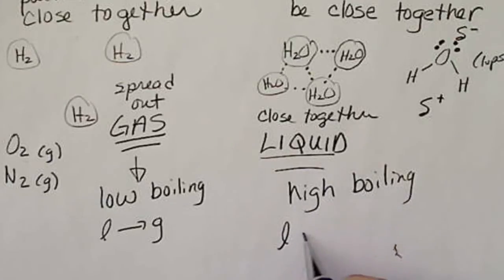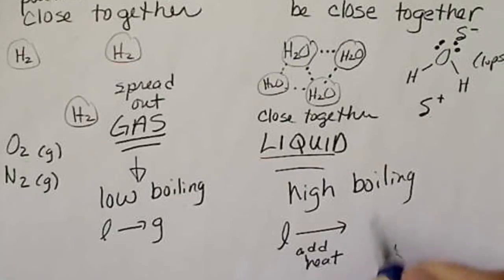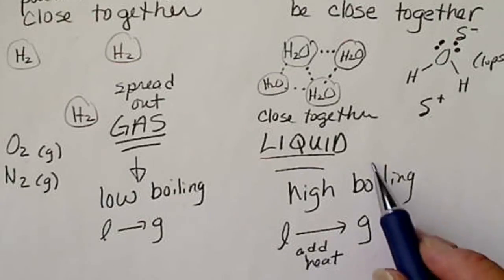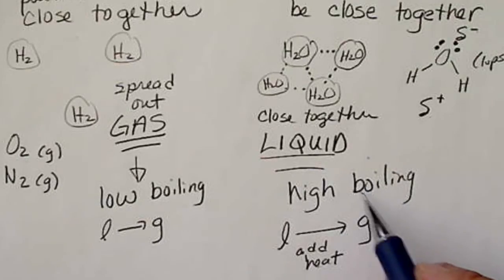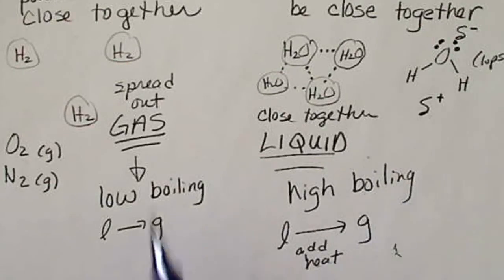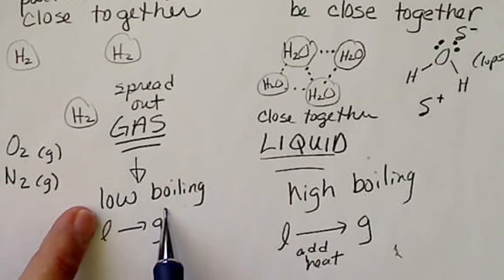Water is a liquid at room temperature. We have to add heat in order to make water turn into a gas. Anything that's a liquid is automatically going to have a high boiling point. And anything that's a gas has a low boiling point.